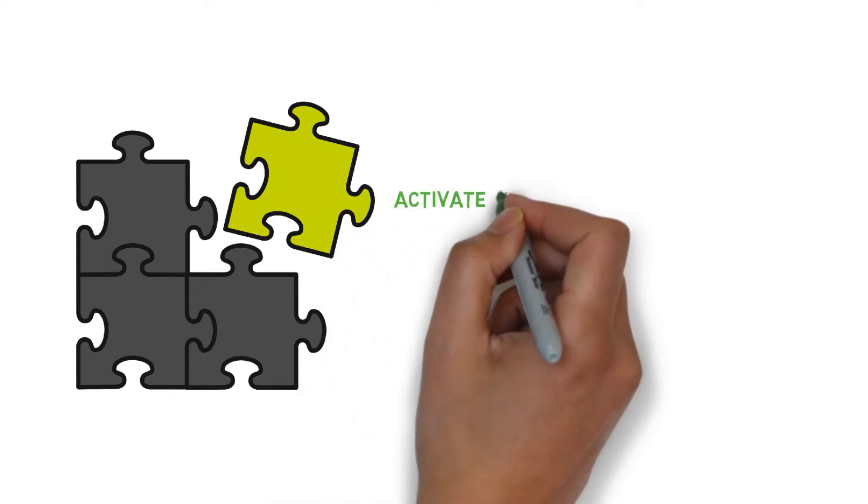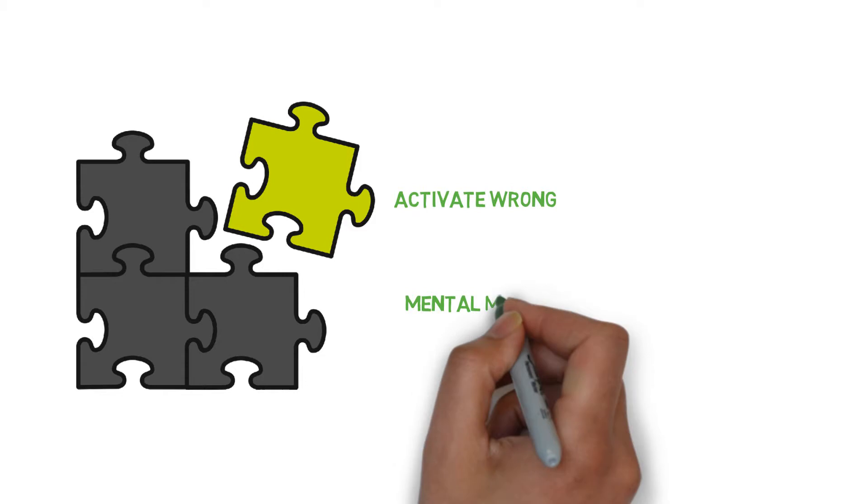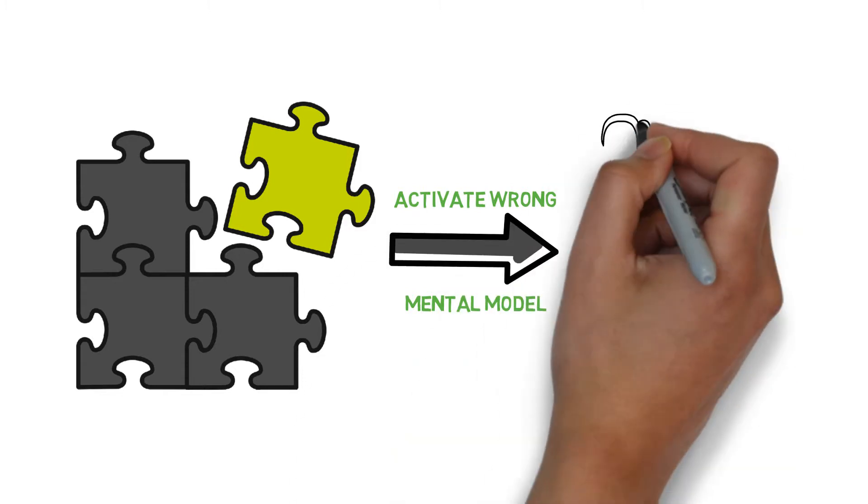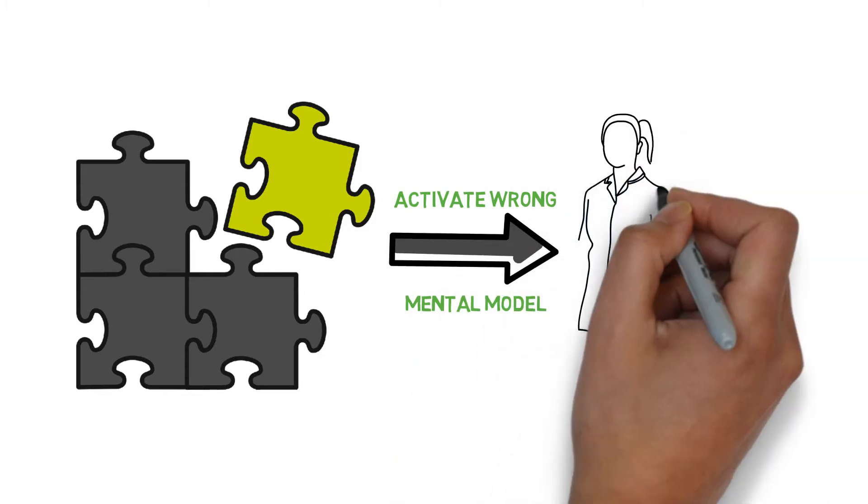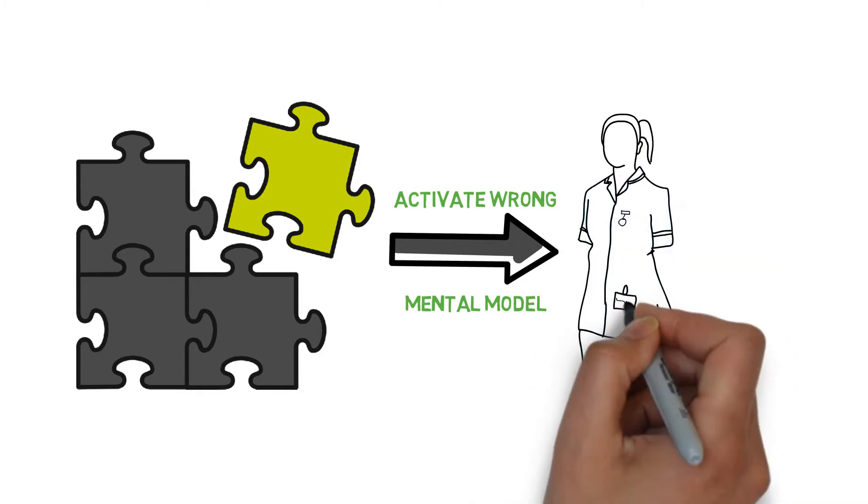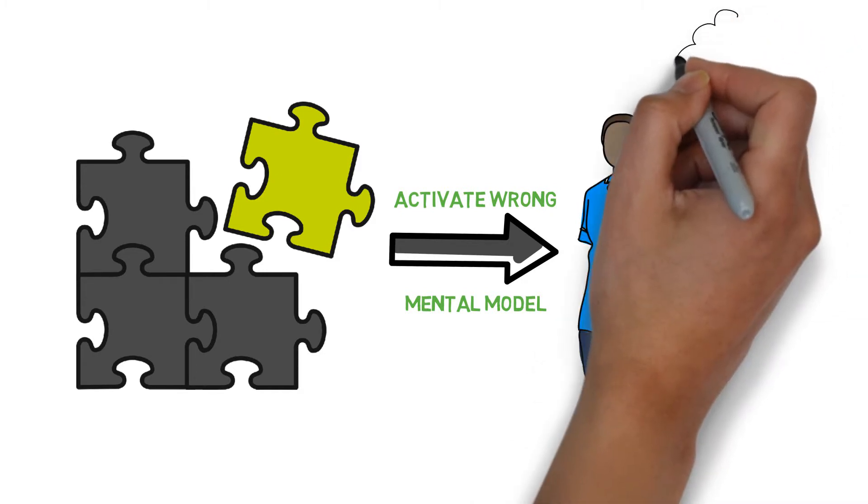Therefore, if we are given inaccurate information, we can create or activate the wrong mental model. If facts do not completely fit our mental model, we may bend them to make them fit a mental model which is wrong for the situation.